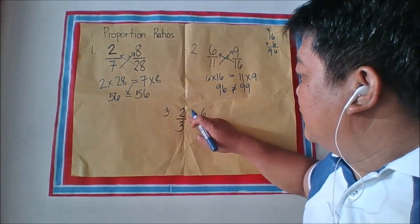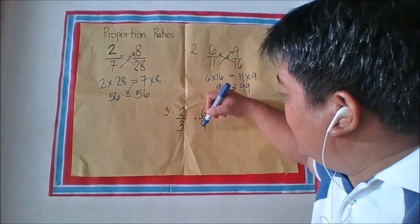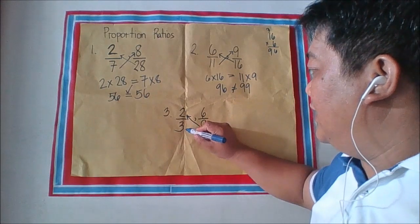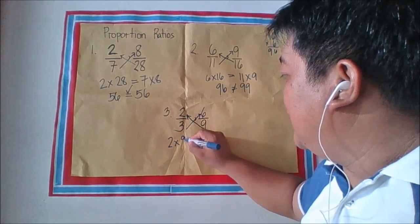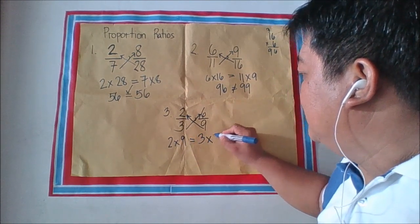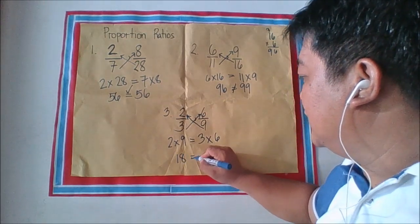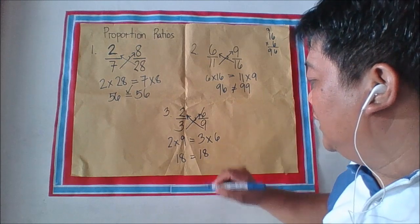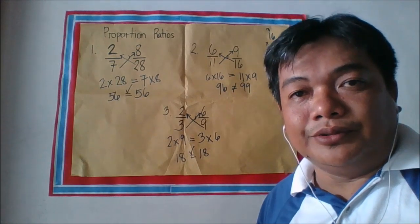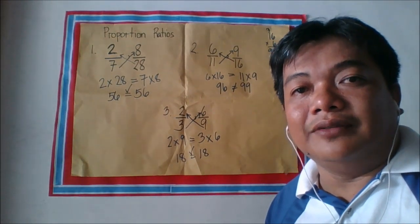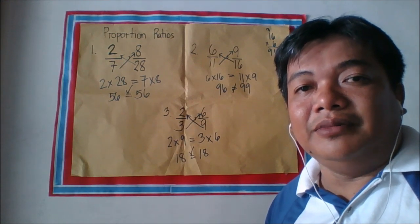For number three: 2/3 and 6/9. We cross multiply: two times nine is equal to 18, and three times six is equal to 18. So 2/3 and 6/9 are proportional because they have equal products of the extremes and the means.